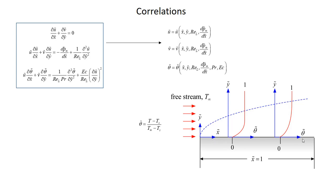Here I'm showing the dimensionless temperature at two different dimensionless x positions. Remember, the dimensionless temperature was defined as (T − T_s) normalized by (T∞ − T_s), so at the surface the dimensionless temperature is zero, and as you move out toward the edge of the boundary layer it approaches one. My dimensionless x position goes from zero at the leading edge to one at the trailing edge.